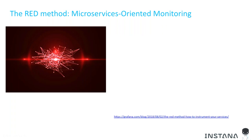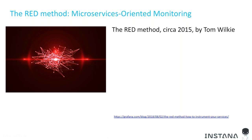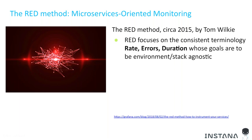The RED method was introduced to help bridge that gap, offering a more agnostic approach to monitoring application services. Created in 2015 by Tom Wilkie, VP of Product at Grafana, it suggested that while USE is certainly useful, it rarely answers how the user is being impacted. For example, a system load of 95 on a four-CPU machine is probably bad, but in a distributed cloud-native application the impact on user experience may be minimal or non-existent due to redundant and fault-tolerant architecture.